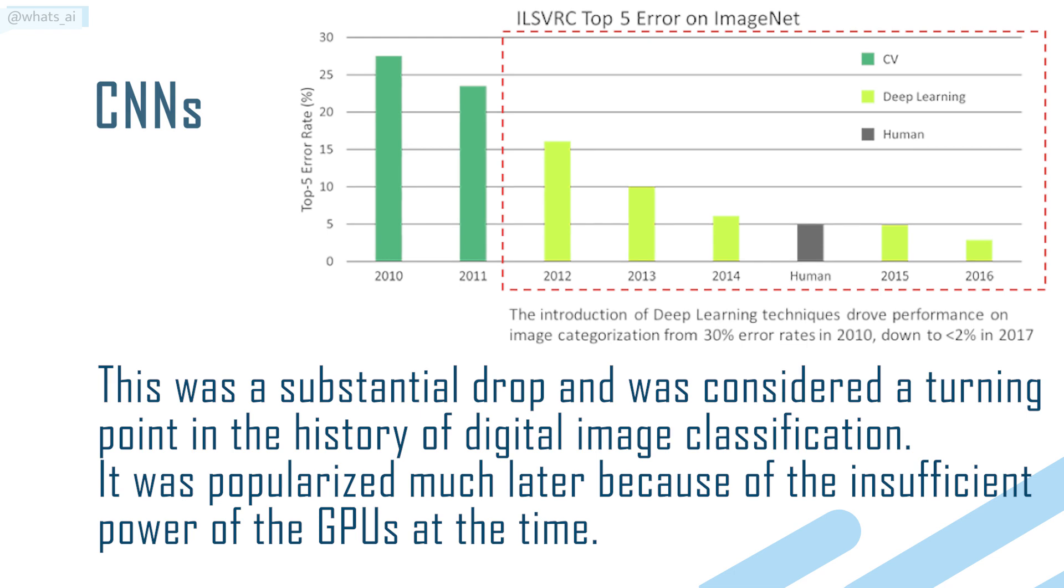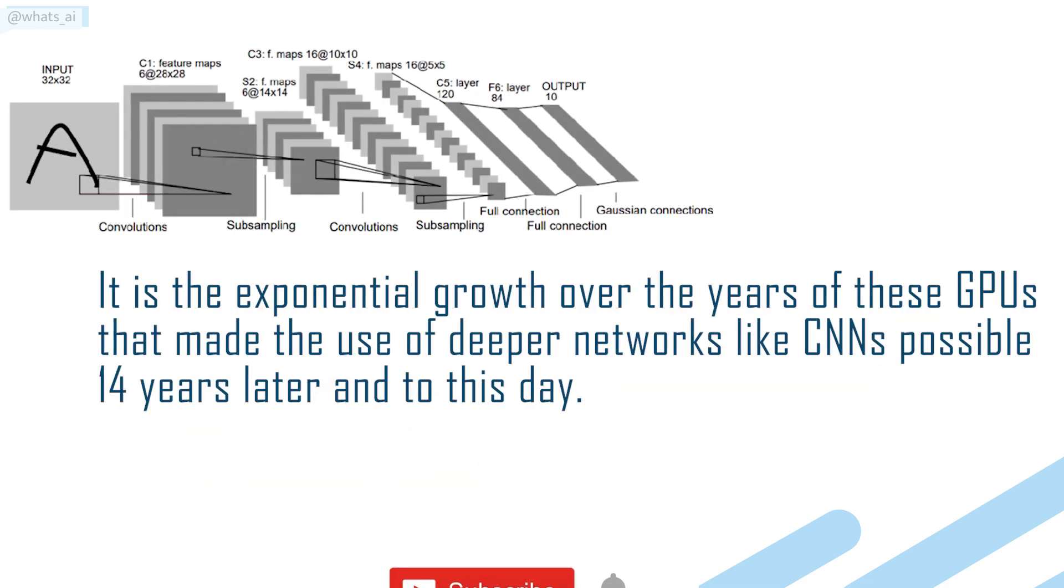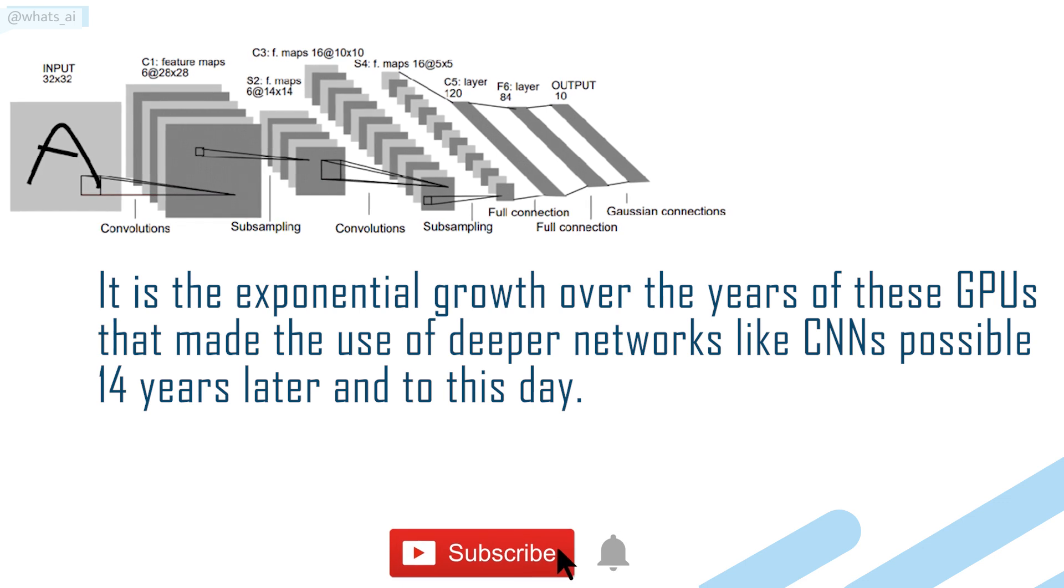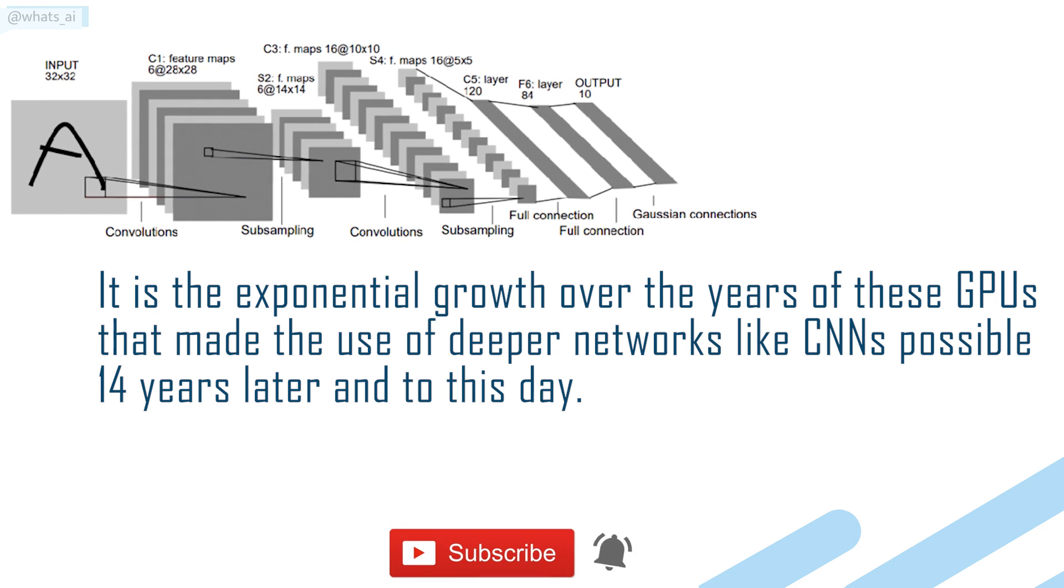It was popularized much later because of the insufficient power of the GPUs at the time. It is the exponential growth over the years of these GPUs that made the use of deep networks like CNNs possible 14 years later and to this day.